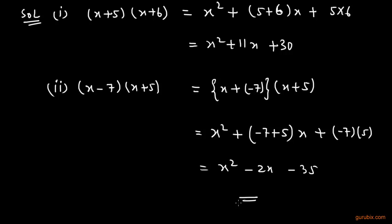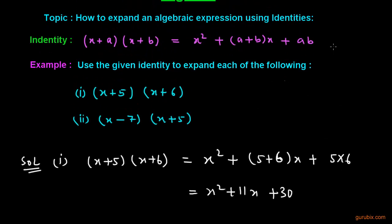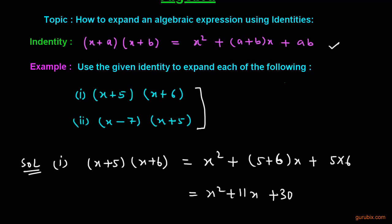So this is the solution of the second part. This is how we can use this identity to find the product of algebraic expressions like this. Thank you.